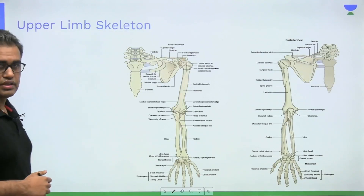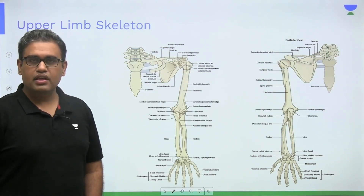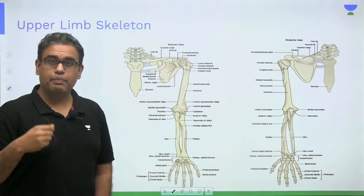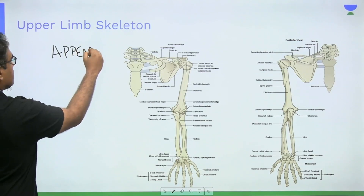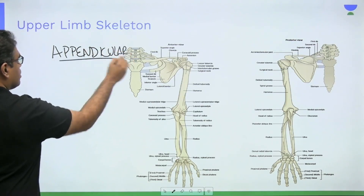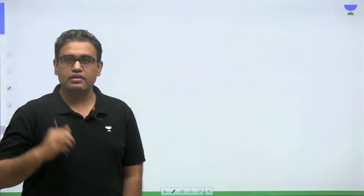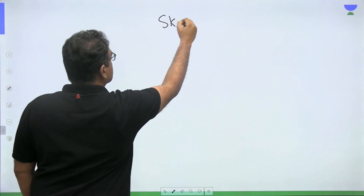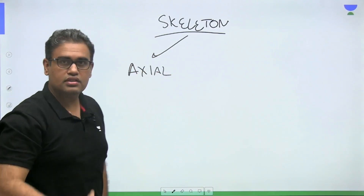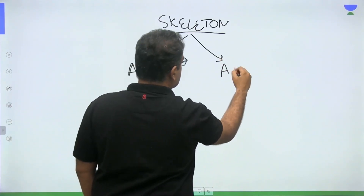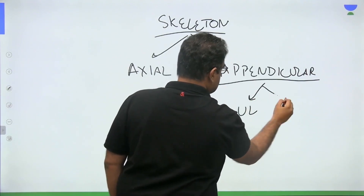Let us start the first topic, osteology. Here we are seeing the whole bony architecture of the upper limb. As it is an appendage from the body, the skeleton of the upper limb is known as the appendicular skeleton. In general anatomy basics, the skeleton is of two types: axial and appendicular. The axial skeleton is about the main axis of the body, and the appendicular skeleton is about the appendages.